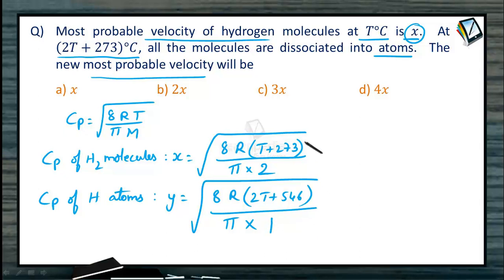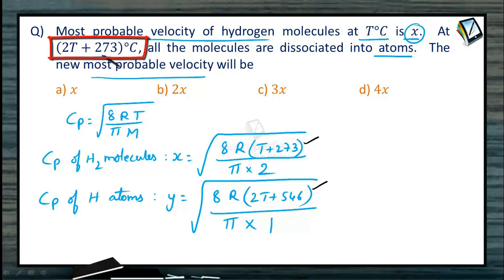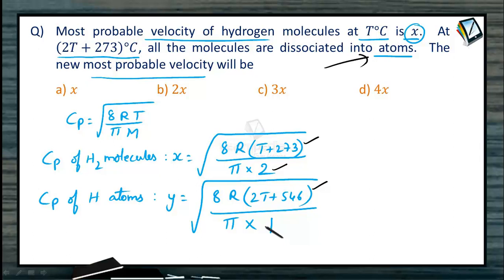There are two points where you might go wrong. First, while substituting the temperature: t degree centigrade becomes t plus 273, and 2t plus 273 degree centigrade becomes 2t plus 546 Kelvin. Second, the molecular mass for hydrogen molecules is 2, but since the molecules are dissociated into atoms, the atomic mass is 1.